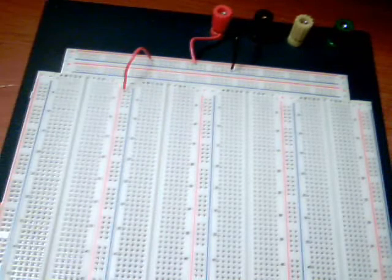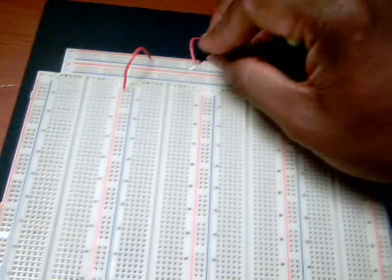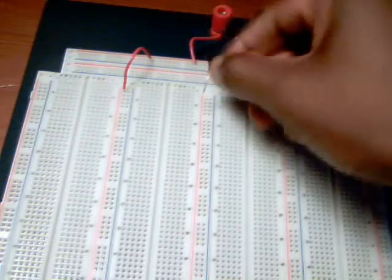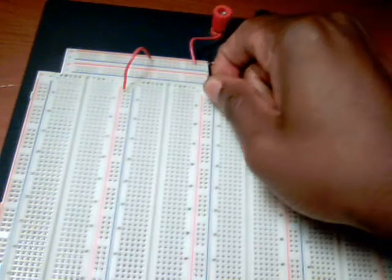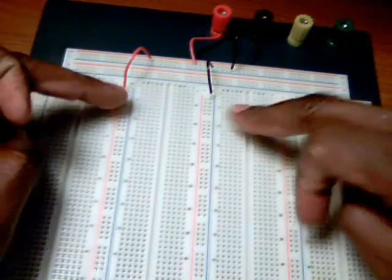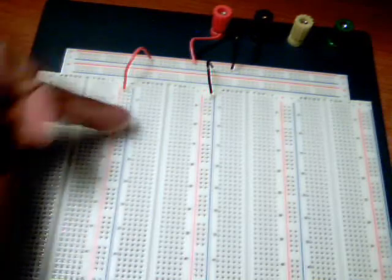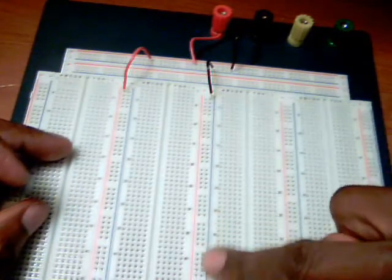And then I'll take a piece of wire here to bring our ground from the top. So now what we've effectively done is created a rail of voltage, positive voltage coming down here and ground coming down on this side.